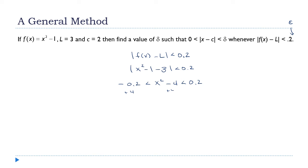Adding 4 to all three parts: 3.8 < x² < 4.2. Now take the square root of all three parts. The square root of 3.8 is approximately 1.949, the square root of x² is x, and the square root of 4.2 is approximately 2.049. So every x value between 1.949 and 2.049 gets mapped to a number closer to 3 than 0.2.